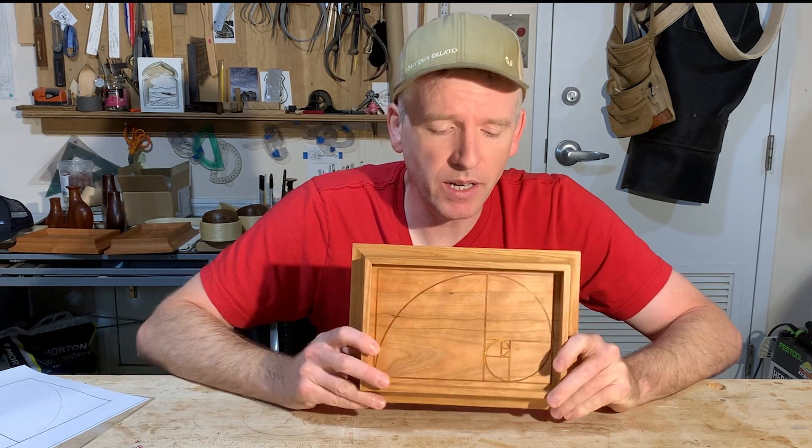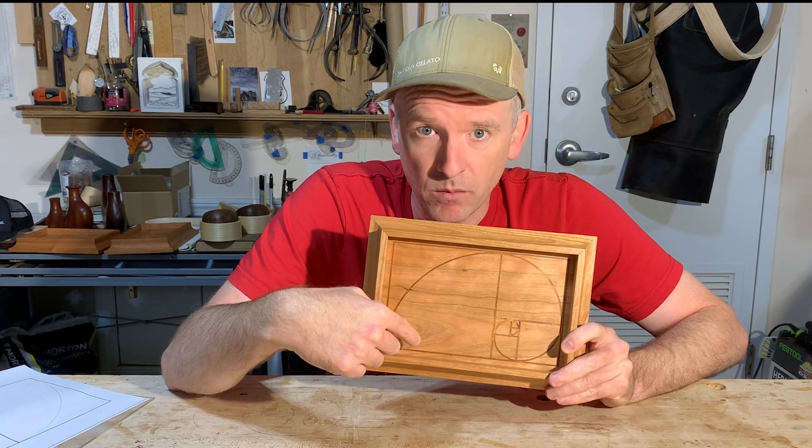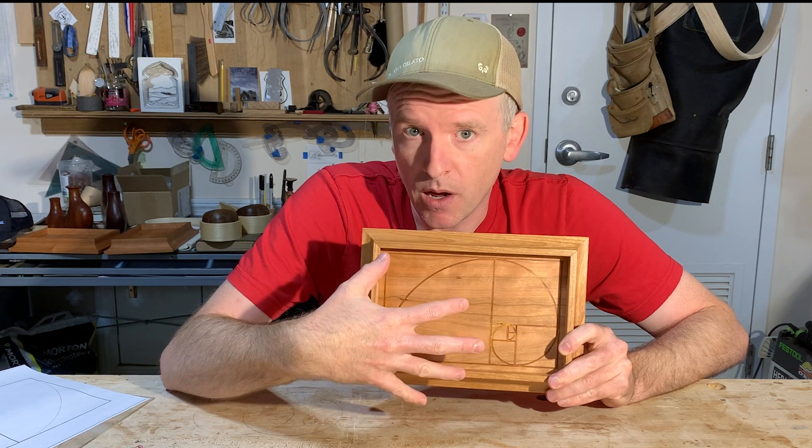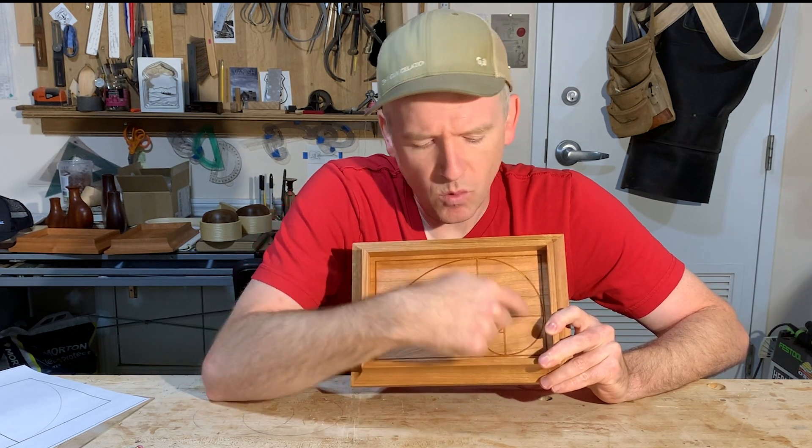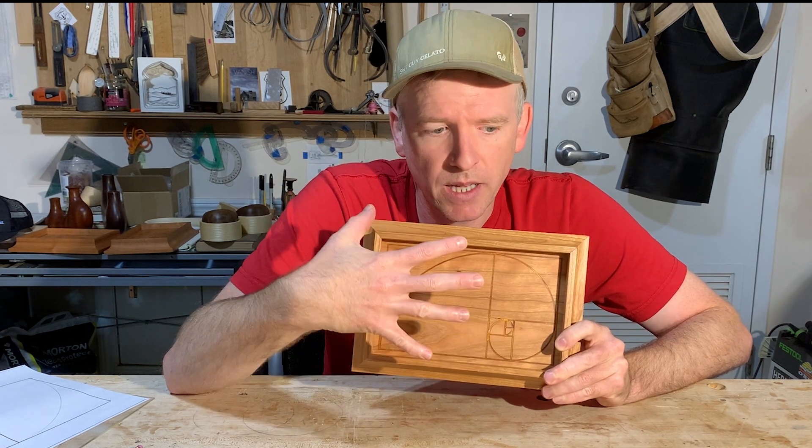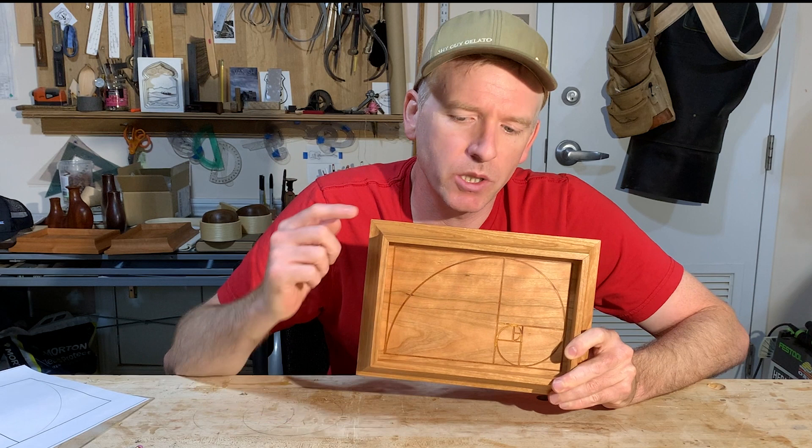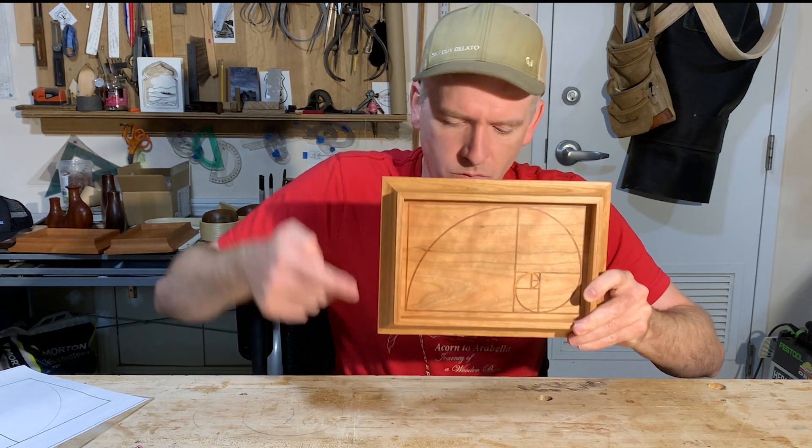Now as you get up a bit in the numbers, like to this many steps, this ratio becomes what they call the golden ratio. It's pretty close when it's smaller, but the bigger, the more of these sequences you go through, the closer to the actual golden ratio it becomes, which is the one to 1.618 rectangle.